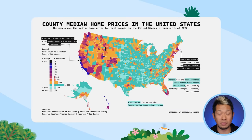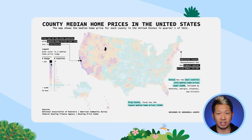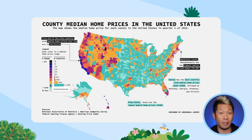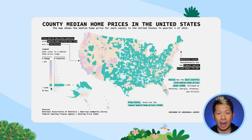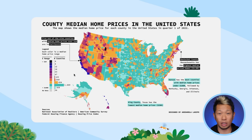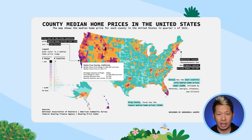This map shows median home prices in the US, with colors used to show differences between similar median-priced homes. Here are some suggestions to make your maps memorable: try using a map as a filter for other types of charts, graphs, and tables so viewers can see large trends at a glance, and use filter actions to quickly investigate even further.